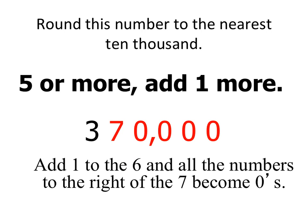So my 3 stays the same, my 6 becomes a 7, and everything else is 0s. Meaning my rounded number is 370,000.